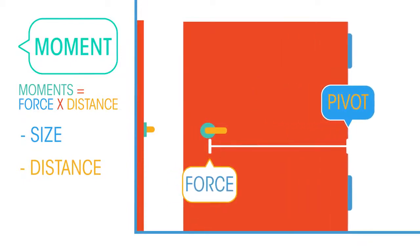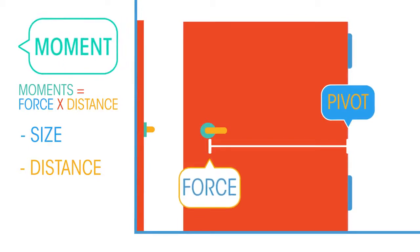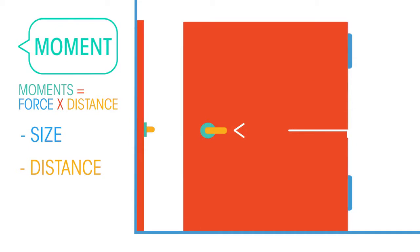The greater the distance between the force and the pivot, the greater the moment of the force. This explains why a door handle is as far away as possible from the hinges, in order to increase the moment of the force.